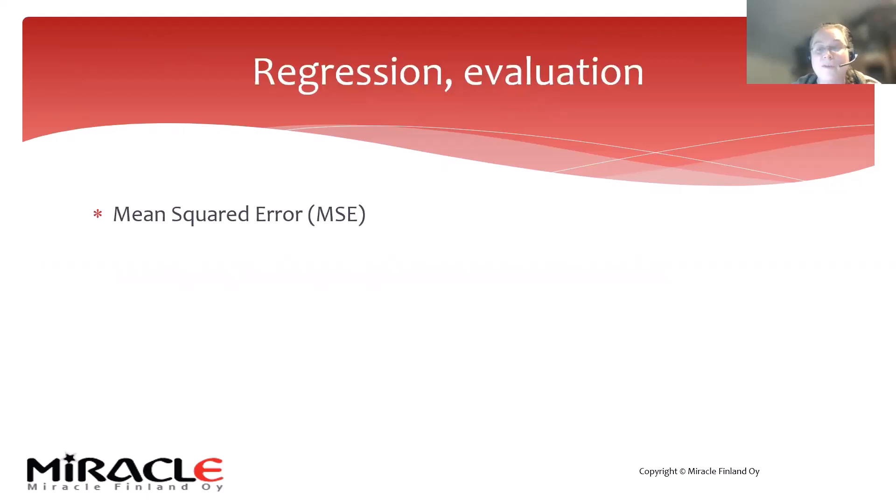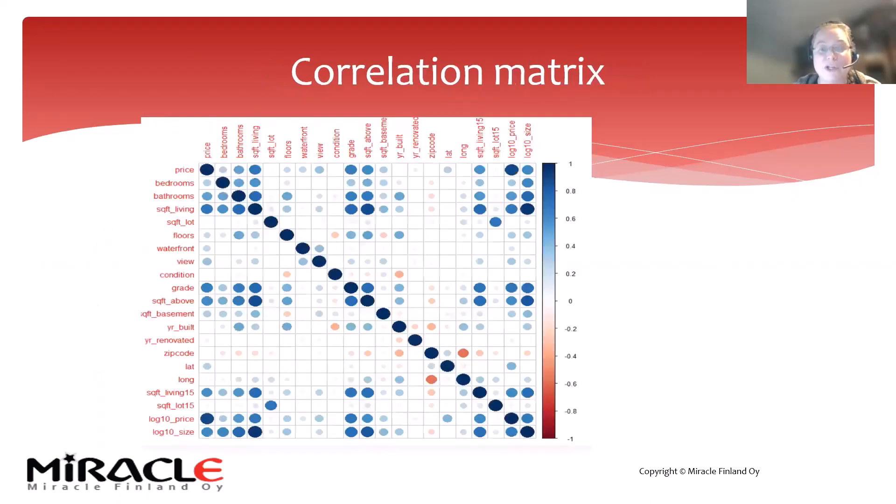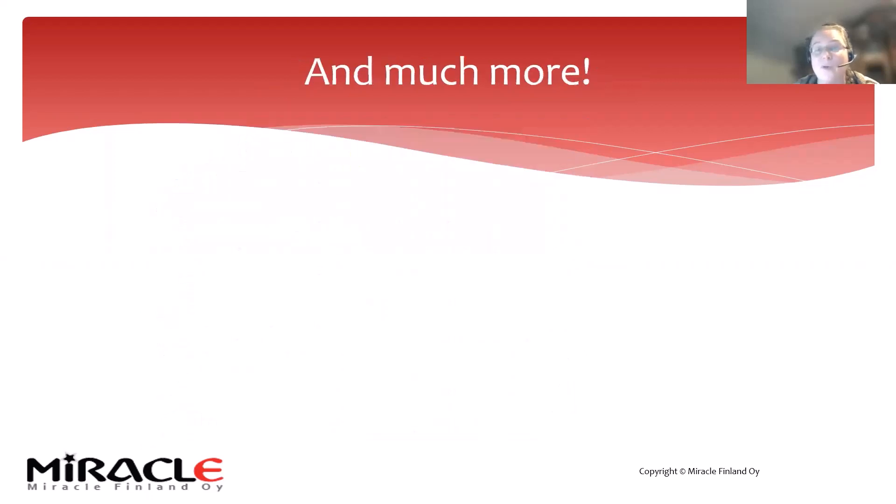For regression evaluations, we're trying to figure out how far we are from the mean. Mean squared error, root mean squared error, mean absolute error, R-squared—these are tools we have available for evaluating regression. Or maybe a correlation matrix, which tells us what kind of correlation one feature has to another feature—how much they're correlated and whether it's a negative or positive correlation. We have all kinds of tools available for evaluating the models and trying to figure out which one is the best.